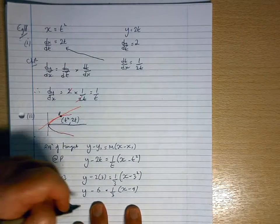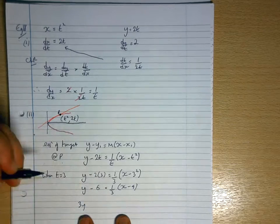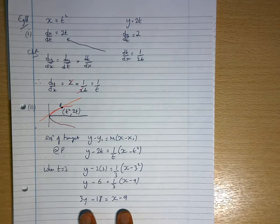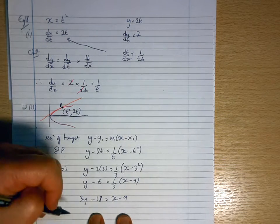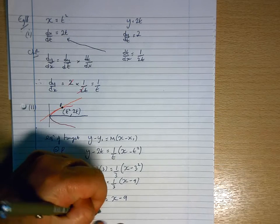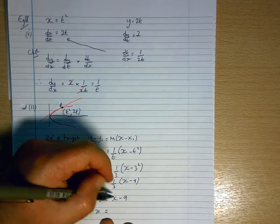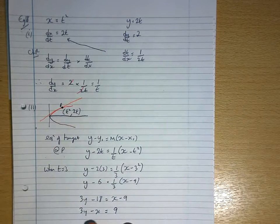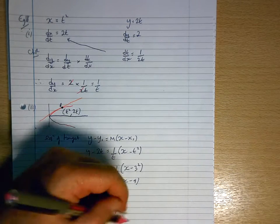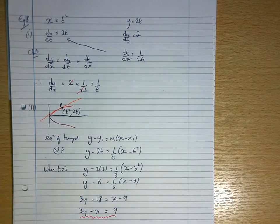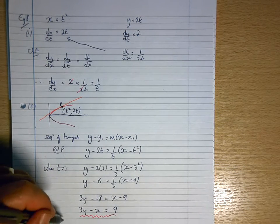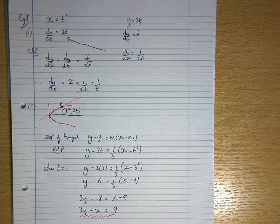Multiply throughout by 3 to get rid of the third. So we get 3y equals that. And then I can have the 3y. Bring the x over. Bring that 18 over the other side. You'd have 18 minus 9. So you'd have 3 minus x. Sorry, 3y minus x equals 9. If they don't specify the format of the equation, you can have it like that. You can have it all on one side. It doesn't matter. As long as you've evaluated everything. Okay.